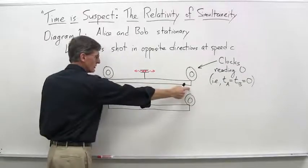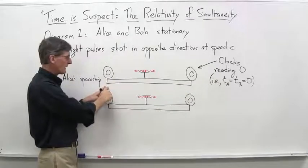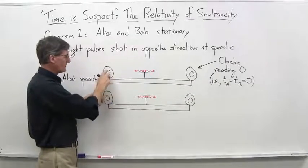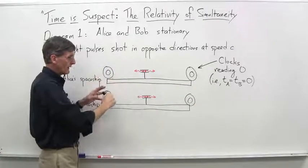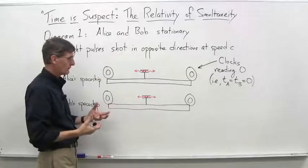So these things here are clocks. Here's Alice's spaceship. Here's perhaps the front. Here's the back of the spaceship. And she has two clocks, one at the front and one at the back. They're synchronized, of course, in her frame of reference.